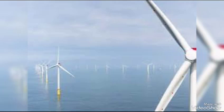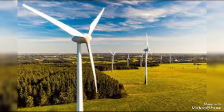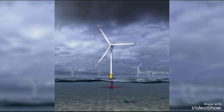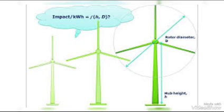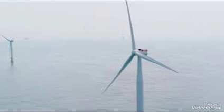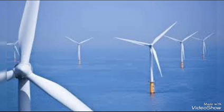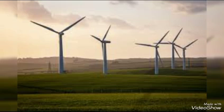Wind turbine towers are made from tubular steel. The tower supports the structure of the turbine. Towers usually come in three sections and are assembled on site. Because wind speed increases with height, taller towers enable turbines to capture more energy and generate more electricity. Winds at elevations of 30 meters or higher are also less turbulent. The wind vane measures wind direction and communicates with the yaw drive to orient the turbine properly with respect to the wind. The anemometer measures wind speed and transmits wind speed data to the controller.